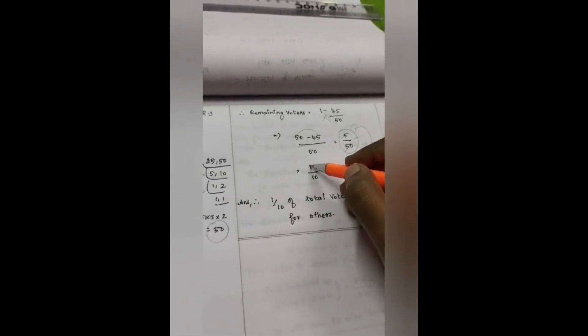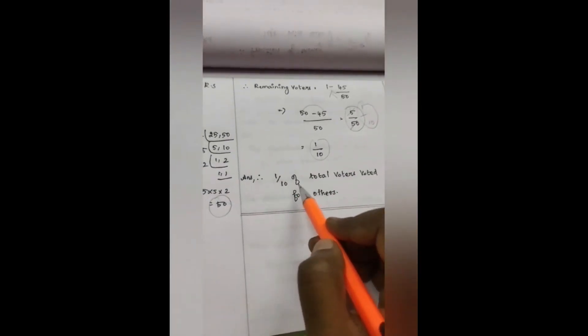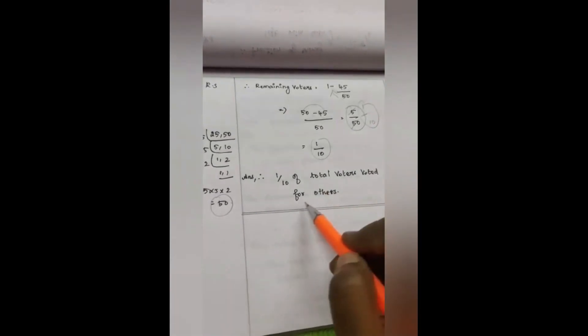In 5 table, 5 becomes 1 time, 50 becomes 10 times. Therefore, after calculating, 1 by 10. Therefore, my answer is 1 by 10 of total voters voted for others.